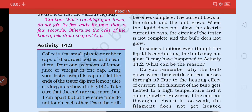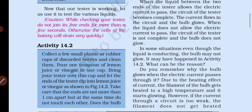In some situations, even though the liquid is conducting, the bulb may not glow. Do you remember why the bulb glows when electric current passes through it? Due to the heating effect of current, the filament of the bulb gets heated to a high temperature and starts to glow. Electric current में heating effect होता है जिससे चीजें गरम हो सकती हैं — जैसे electric induction और iron press में electricity का use होता है और heat produce होती है। इसी वजह से bulb के अंदर का filament गरम होकर जलने लगता है।